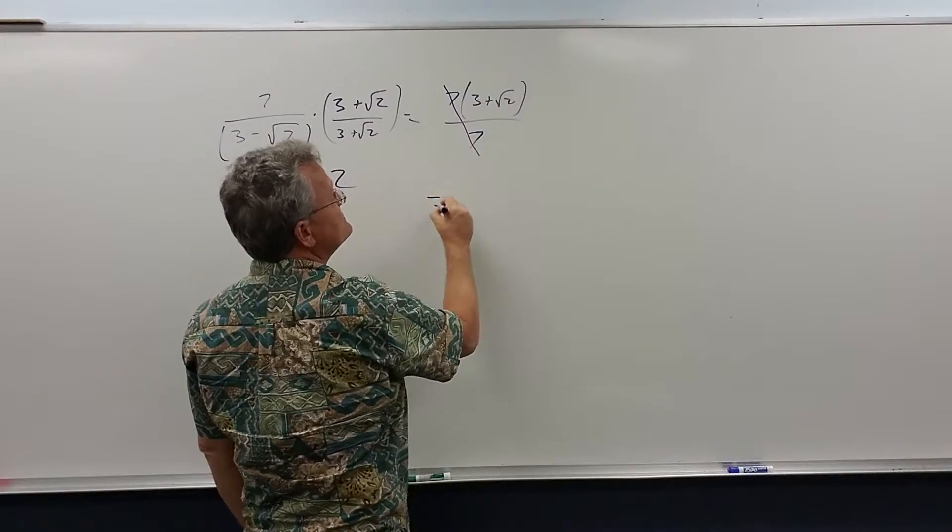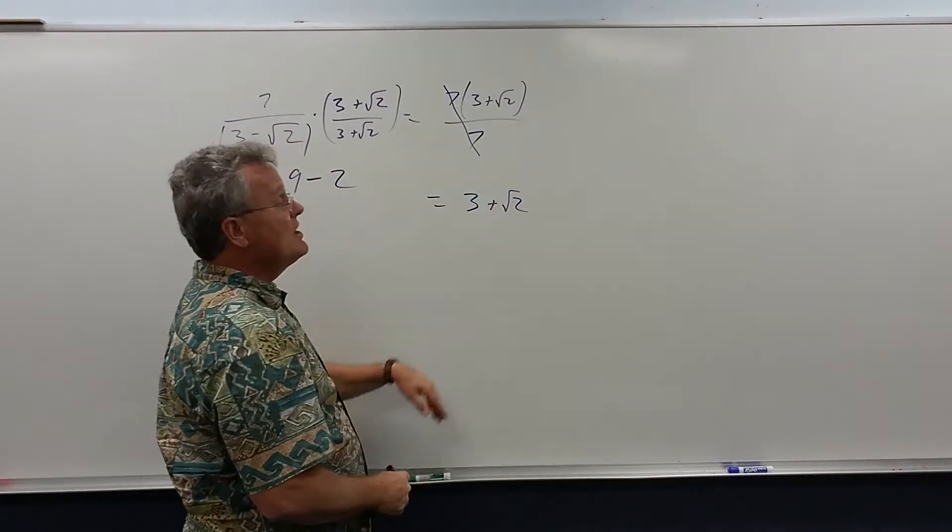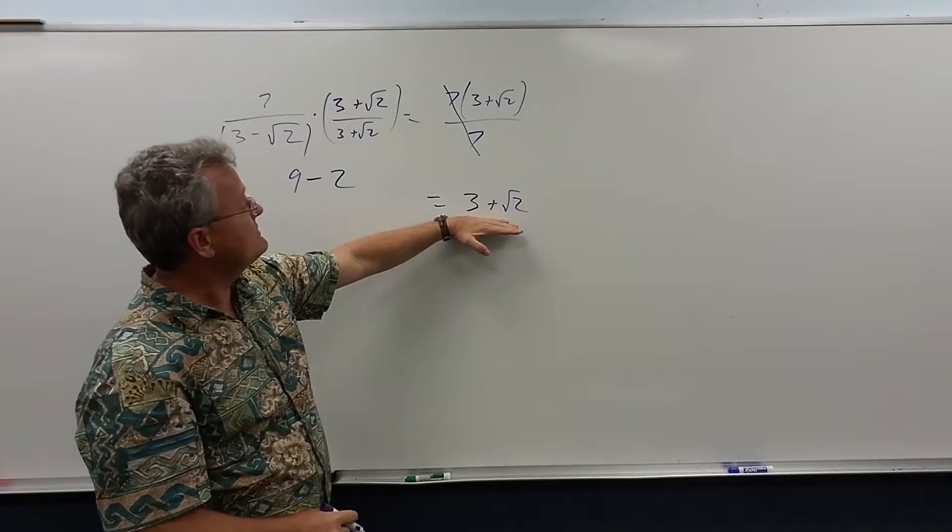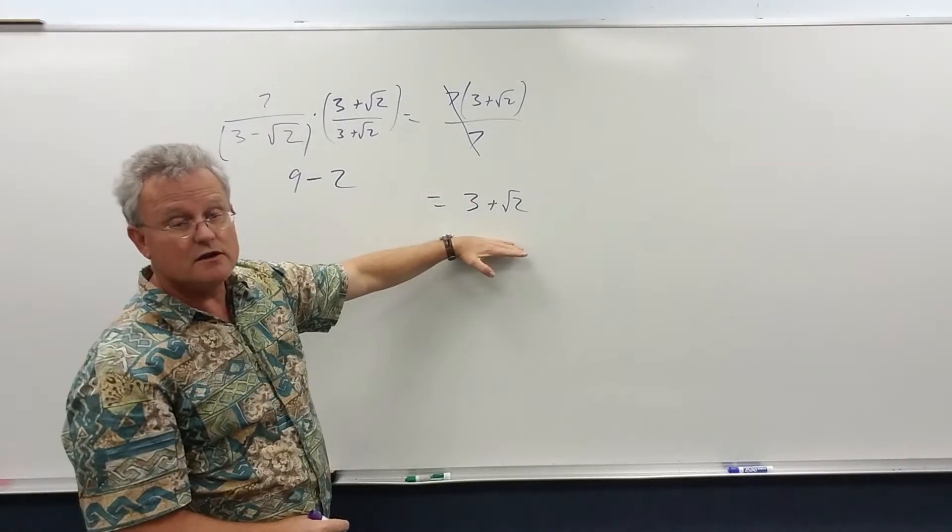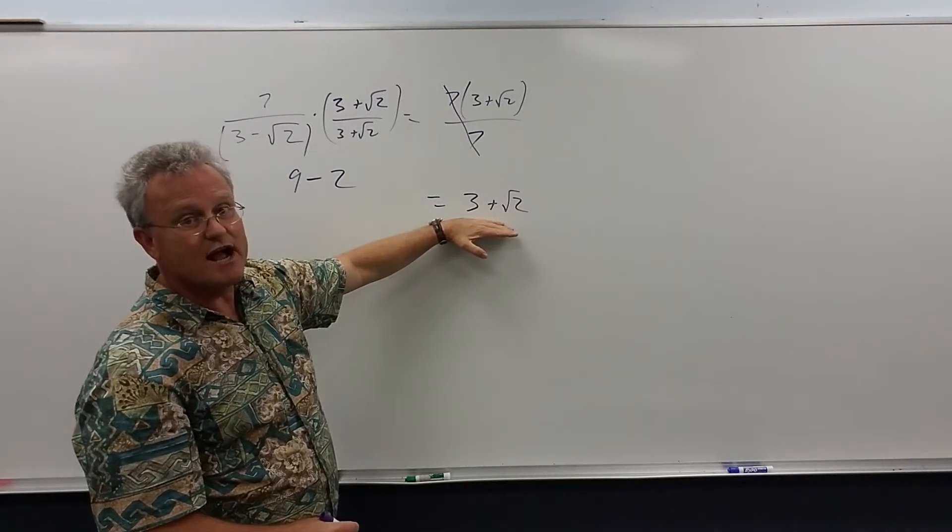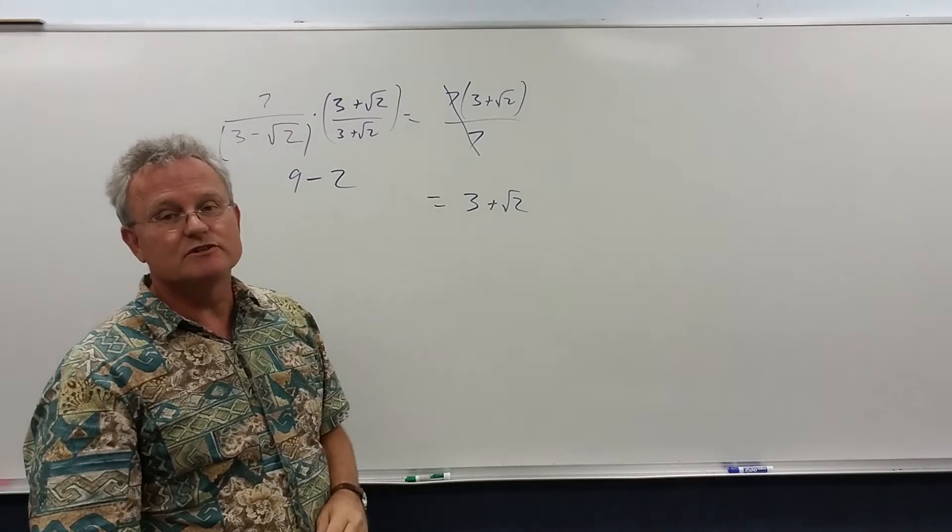They do cancel and we get 3 plus the square root of 2 which we could think of that as 3 plus root 2 over 1 and the denominator is rational. We did rationalize the denominator.